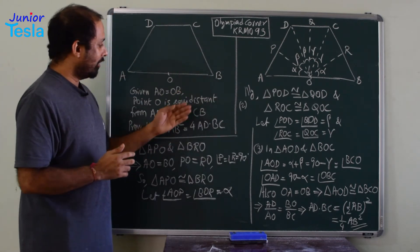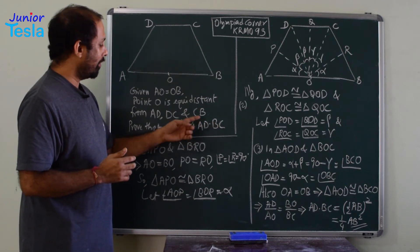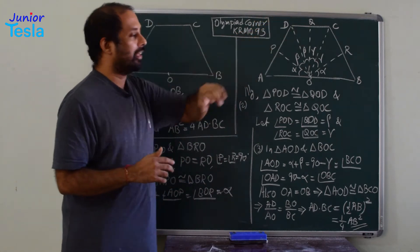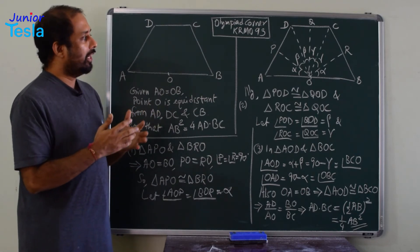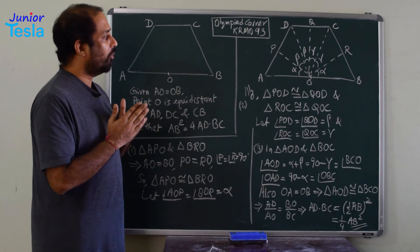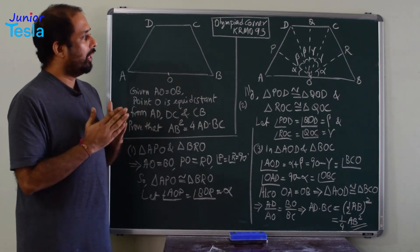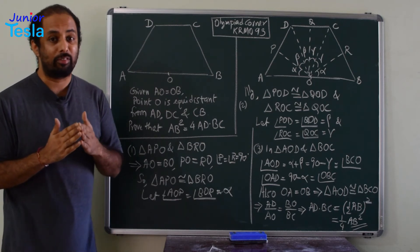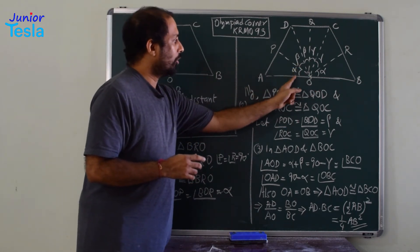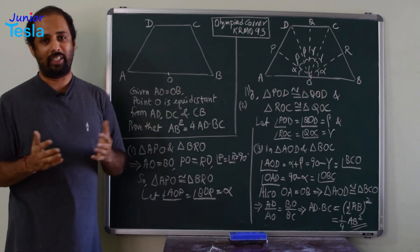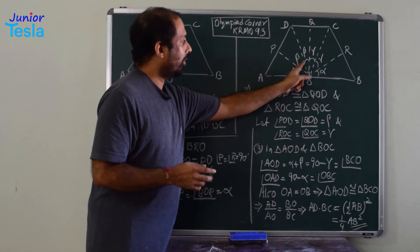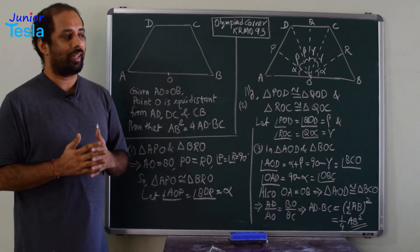Now I have to prove AD · BC = ¼ · AB², so somehow I have to get AD and BC. Let me take the bigger triangles AOD and BOC. In triangle AOD, angle AOD = alpha + beta. But what is the value of alpha + beta? This is a straight angle, so 2·alpha + 2·beta + 2·gamma = 180°, which means alpha + beta + gamma = 90°. Therefore alpha + beta = 90° − gamma.